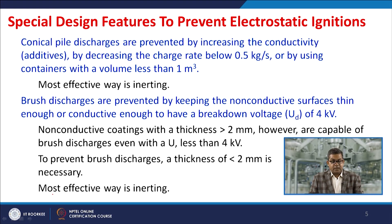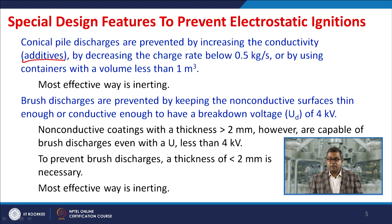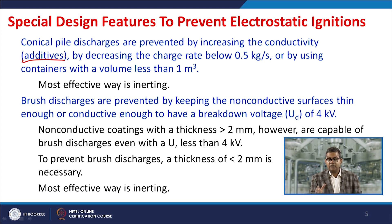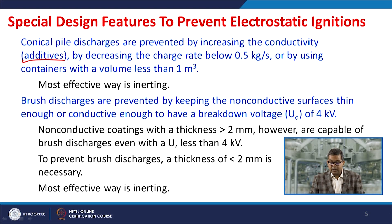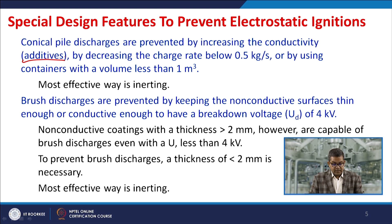Conical pile discharges are prevented by increasing conductivity through additives, by decreasing the charge rate below about 0.5 kilograms per second, or by using containers with a volume less than 1 cubic meter. The most effective way is inerting — if inerting is efficient, you can definitively avoid the hazard of electrostatic ignition. Brush discharges are prevented by keeping non-conductive surfaces thin enough or conductive enough for a breakdown voltage less than 4 kilovolts; a thickness of around 2 millimeters is necessary.